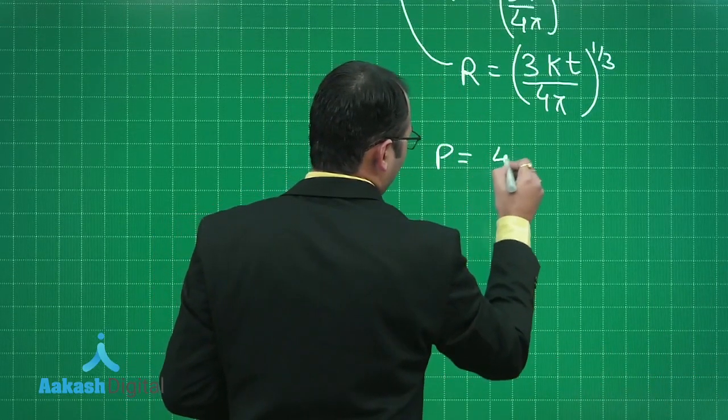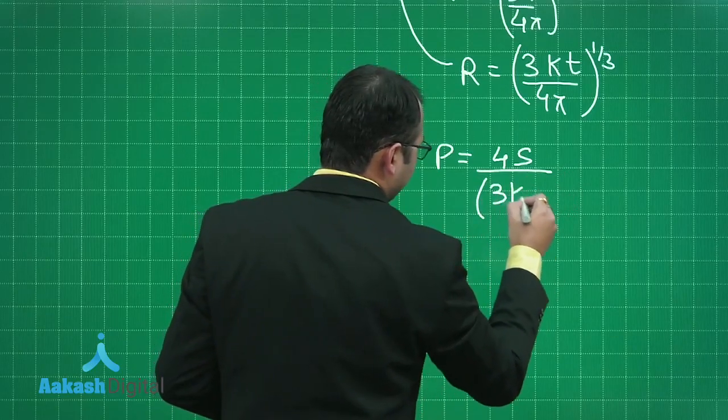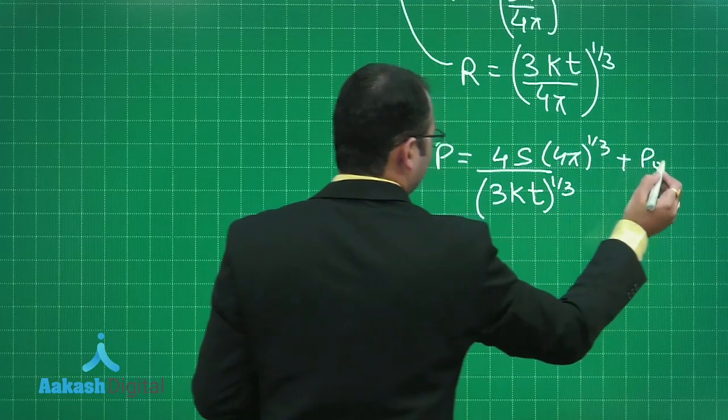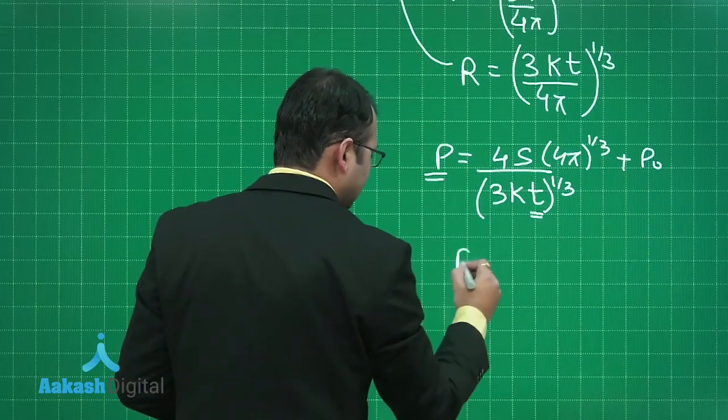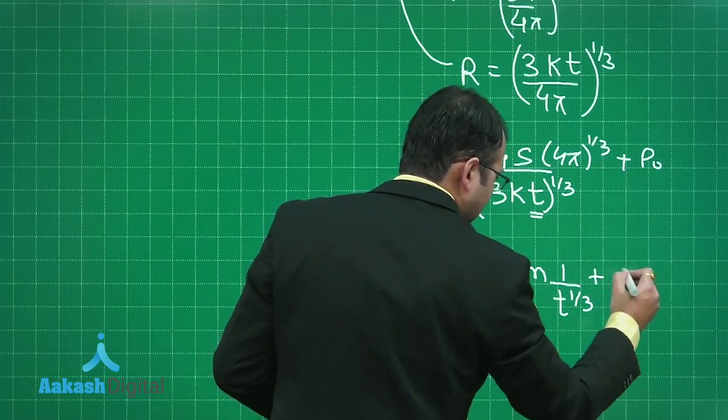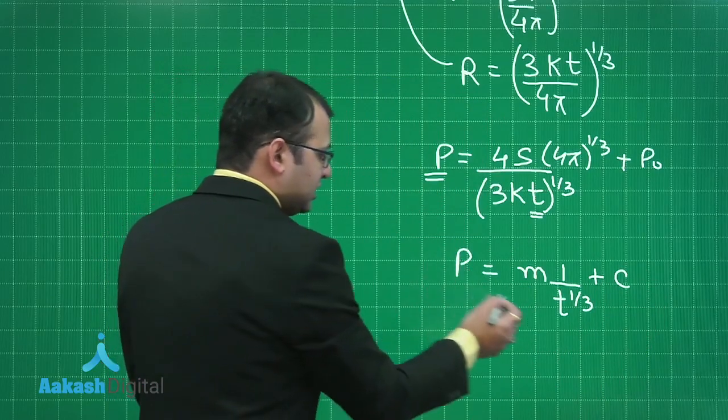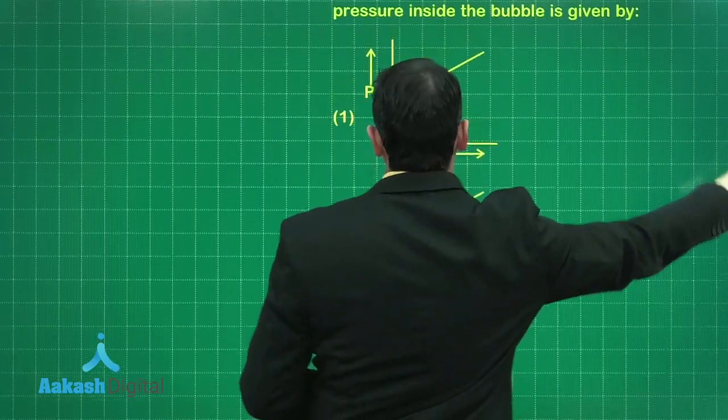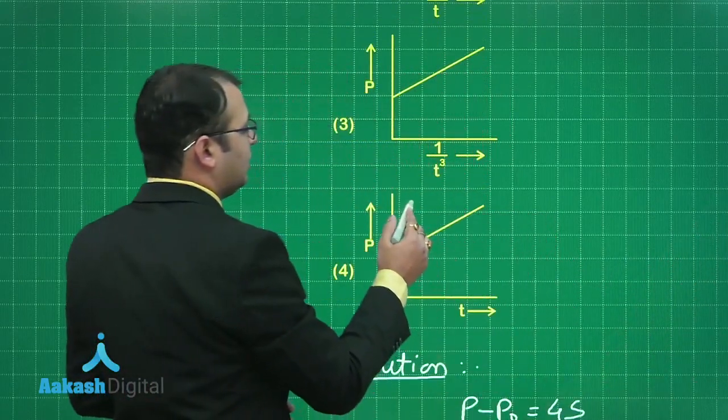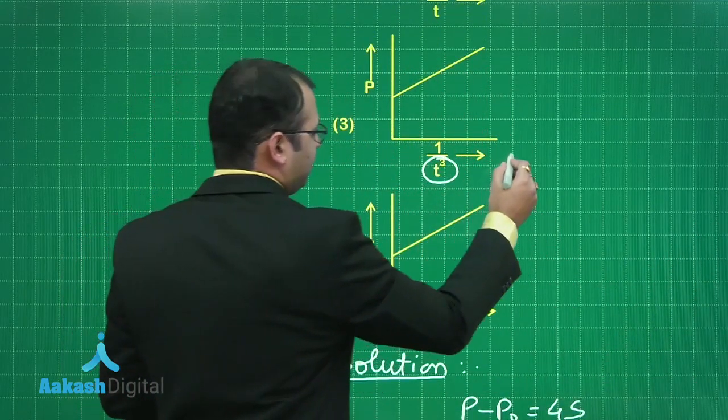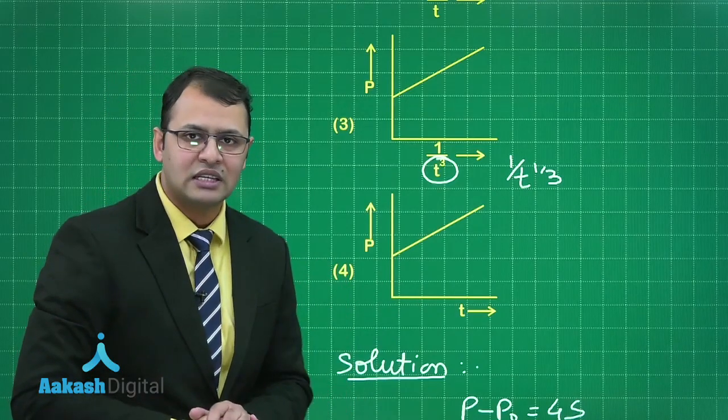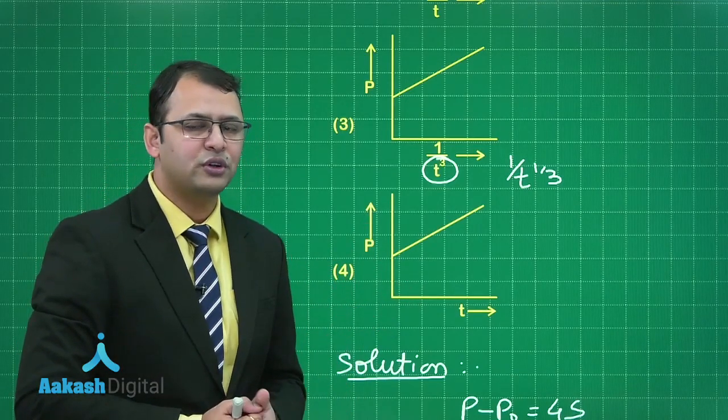When you put this in the equation you will get P equals 4s divided by (3kt/4π)^(1/3) plus P₀. So the relation is P equals some constant m times 1/t^(1/3) plus an intercept. Let's see which is the best suited option. The first one doesn't satisfy, second one doesn't either. This one could have been but it's cube. Among the four, none of the options match. Hope this will be given to you as a bonus question.